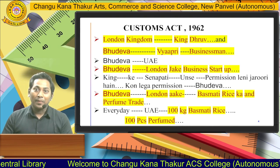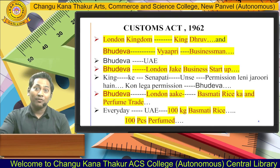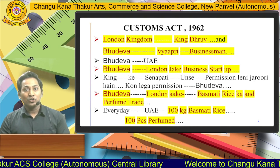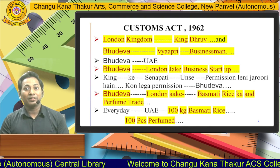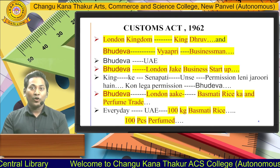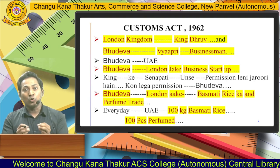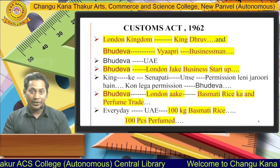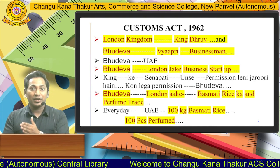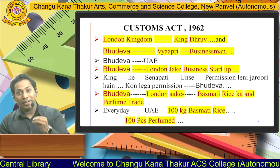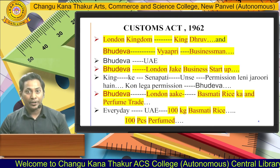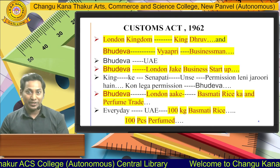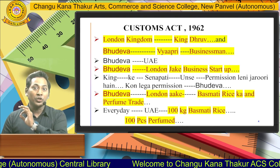Once Bhudeva arrived, he needed to meet the Senapati of the United Kingdom. He met the Senapati and took permission, saying he wanted to do business there. He said if allowed to do business, he would definitely make the payment of tax. The Senapati granted permission. So Bhudeva was now ready to sell his products from UAE to London. Every day, Bhudeva ordered 100 kg of basmati rice and 100 pieces of perfumes from UAE to London.